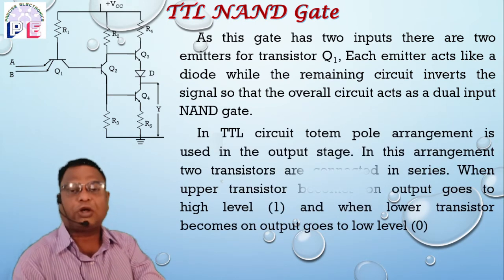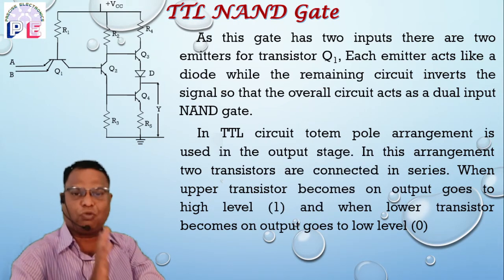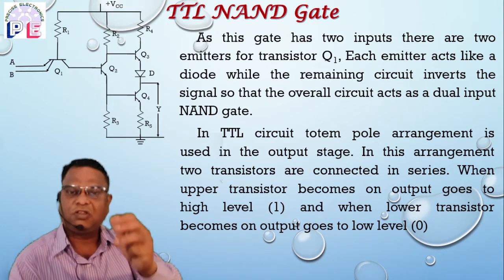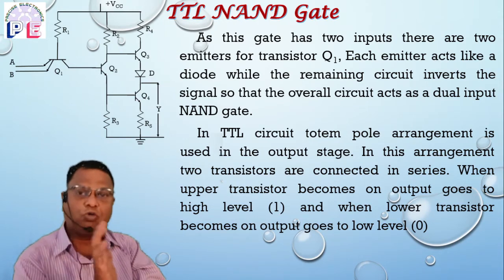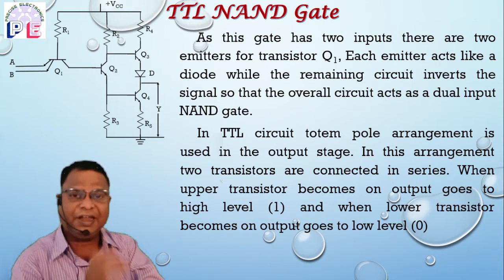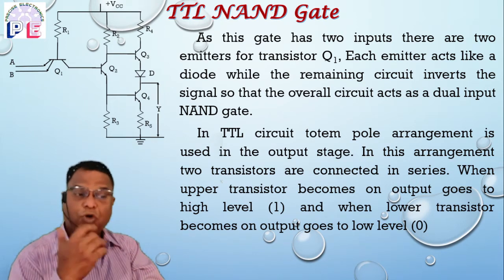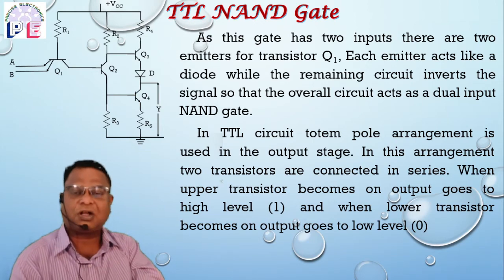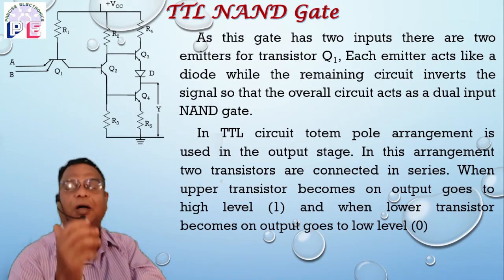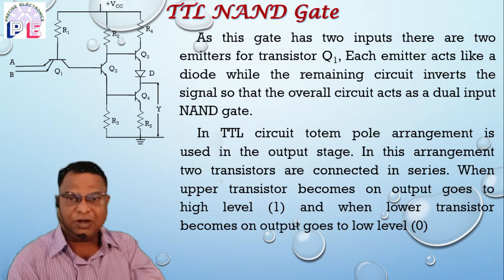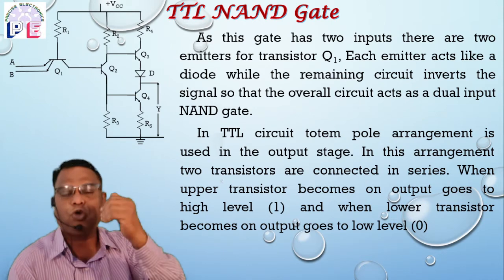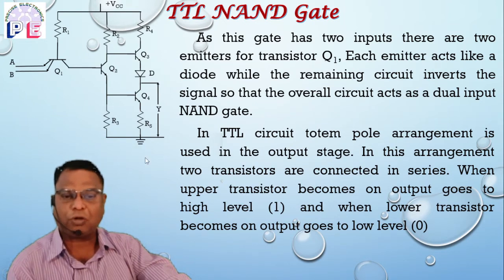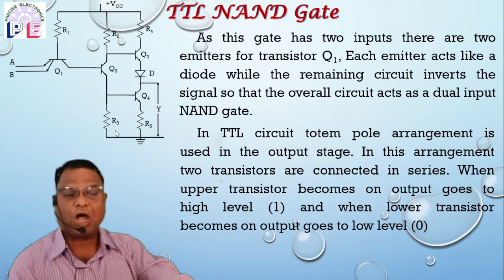In TTL circuits, the totem pole arrangement is used. In the totem pole arrangement, two transistors are connected. When the upper transistor conducts, the output goes to high level. When the lower transistor conducts, the output goes to low level. The two transistors connected in totem pole mode are Q3 and Q4. When Q3 is conducting and Q4 is off, output is high. When Q4 conducts, output goes to low level.